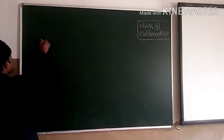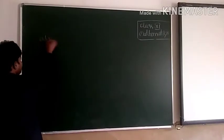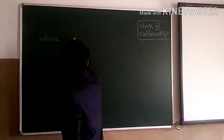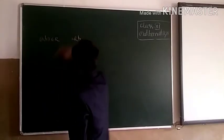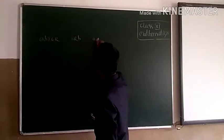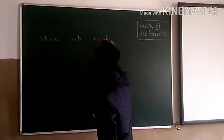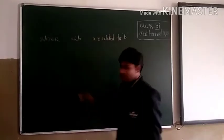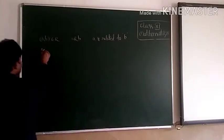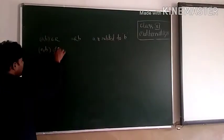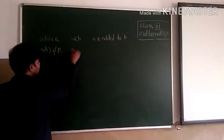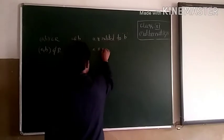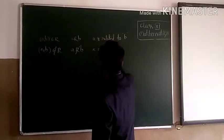Suppose the ordered pair (A, B) belongs to R. Then we say that A is related to B. We can read this as 'A is related to B.' If the ordered pair (A, B) does not belong to R, then we say that A is not related to B. We can read this as 'A is not related to B.'